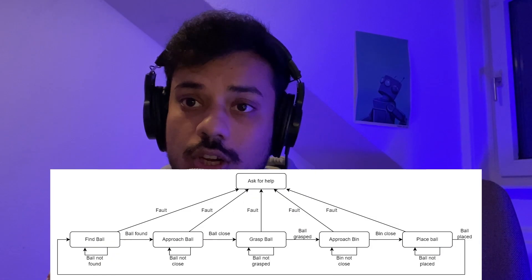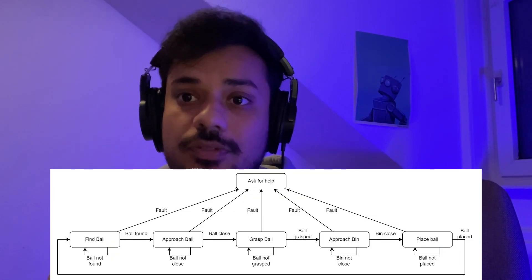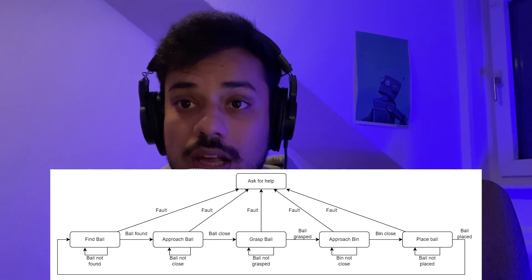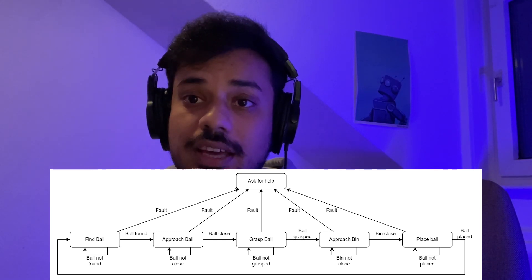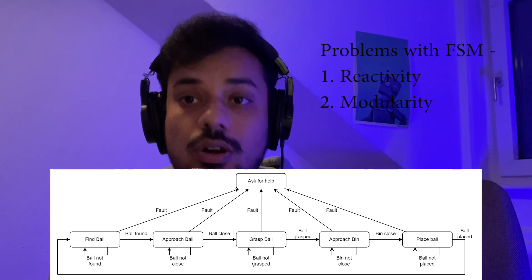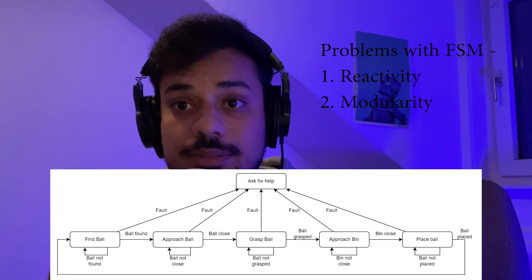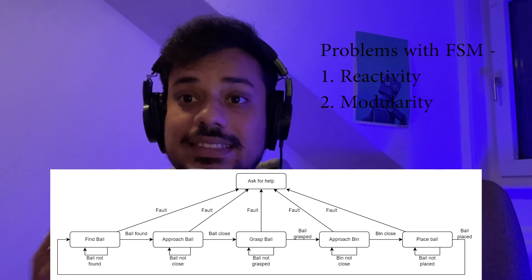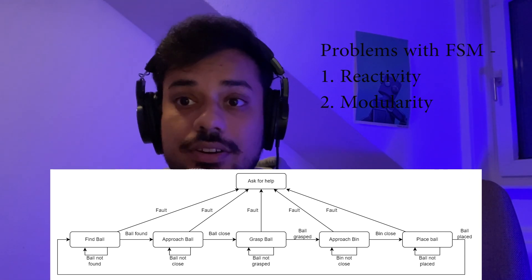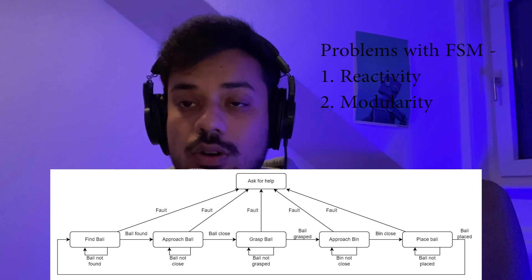Before behavior trees, finite state machines were ruling the world of game engines and robotics. But FSMs had a couple of problems which led to the creation and usage of behavior trees. Looking at this FSM, we are happy because it seems to work well, but there are two problems: reactivity and modularity.